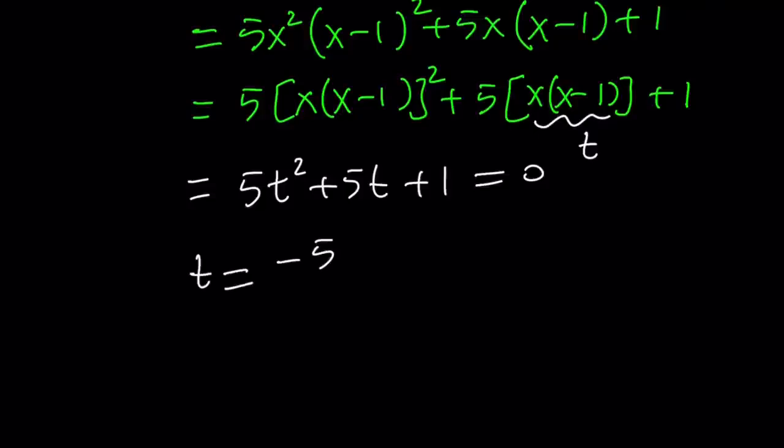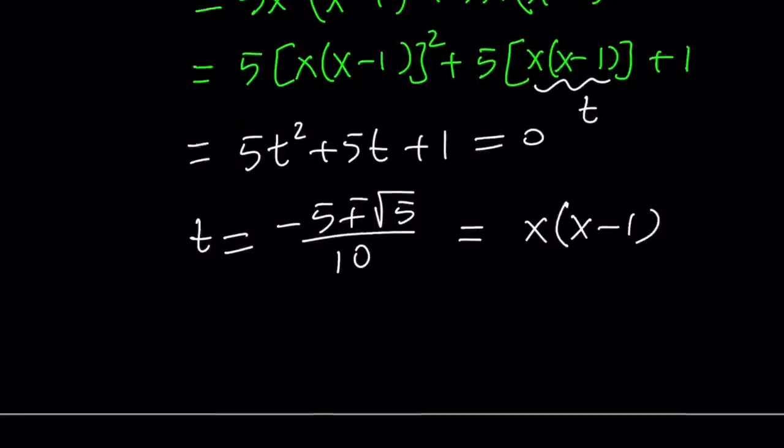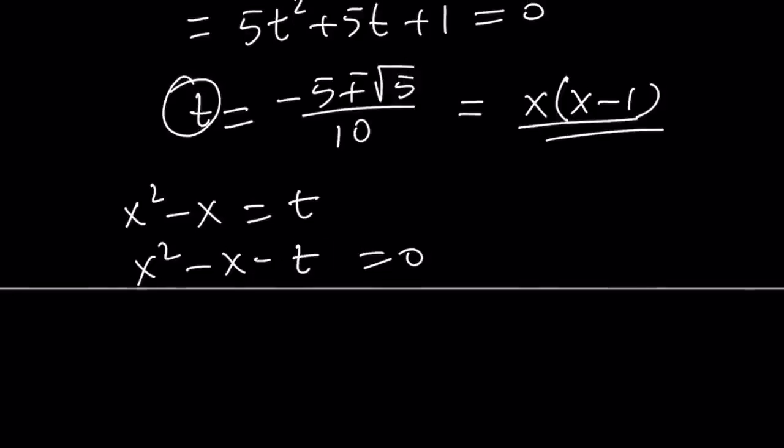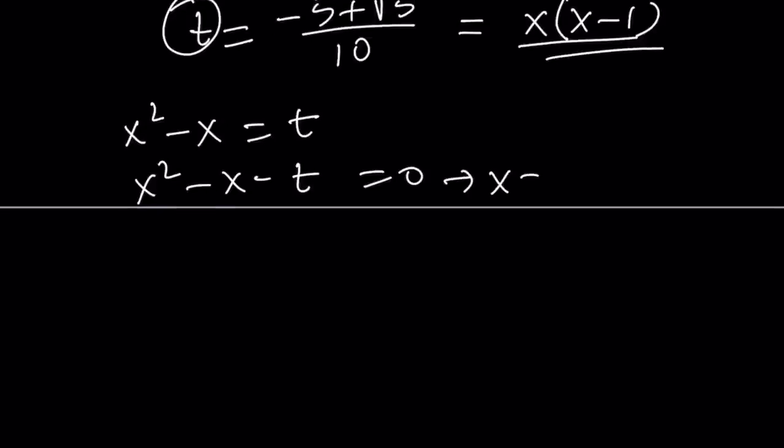From here, t values are going to be negative 5 plus minus the square root of 5 over 10. Now instead of trying to plug it into the original problem, we can write this as x squared minus x equals t and put the t on the left-hand side and solve for x in terms of t. From here, we get x equals one plus minus the square root of one plus 4t divided by two.